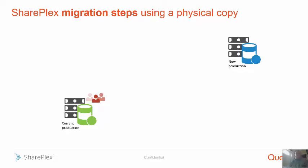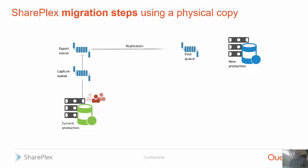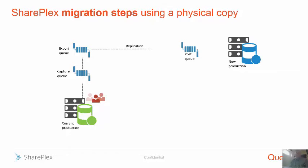We're going to start out by installing and configuring SharePlex on the source and the target, and starting SharePlex on the source. We've got a capture queue, an export queue, and a post queue on the target. The post queue is just going to contain the transactions we're capturing and have them available to apply to the target, as I'll explain in a few minutes.